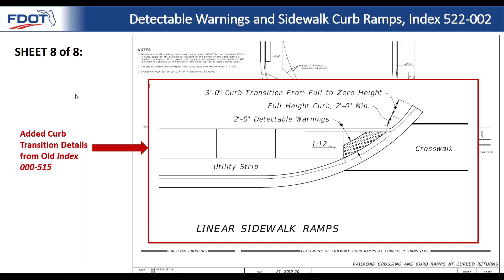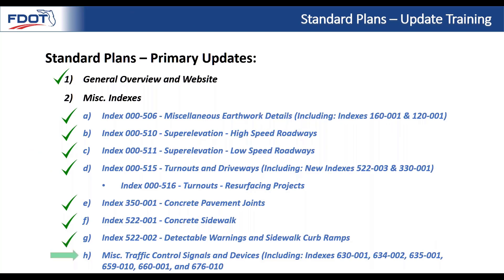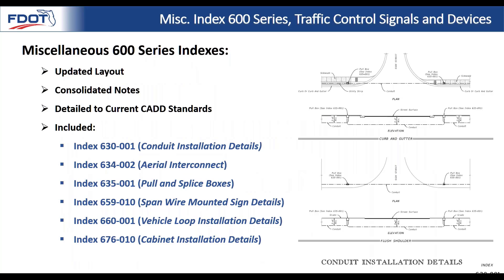Finally, several miscellaneous traffic control signals and devices indexes received a general update: conduit installation details, aerial interconnect, pull and splice boxes, span wire mounting sign details, vehicle loop installation details, and cabinet installation details. There were no design changes or content changes — we just updated these indexes. The rest of the 600 series had already received updates to match current CAD standards and current layout design policy. We also did some note consolidation. For the most part, this was just a refresh, not much of a change in terms of content.